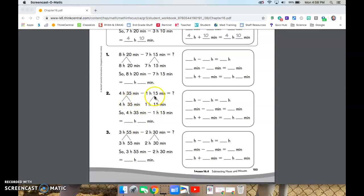Number two here, we have four hours minus one hour is three hours. And 35 minus 15, three minus one is two, so 20 minutes. So three hours, 20 minutes.